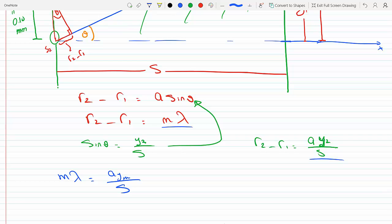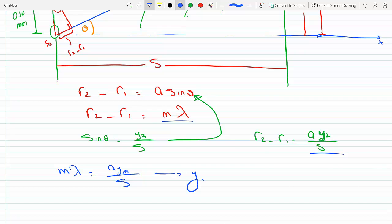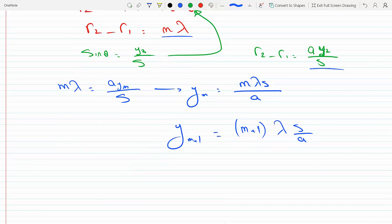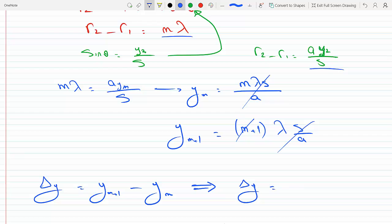So m λ has to equal a y₂ over s. If we call this yₘ at the mth fringe, then we get yₘ equals m λ s over a. I can make the same exact analysis for the m+1 fringe, which would get me yₘ₊₁ equals (m+1) λ s over a. Now I could find the separation between the fringes by subtracting: yₘ₊₁ minus yₘ. If I subtract these two, I'm left with Delta y equals λ s over a.